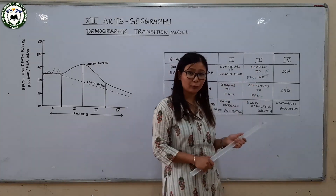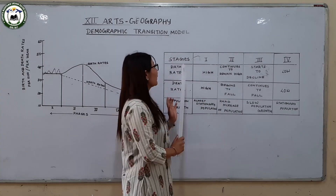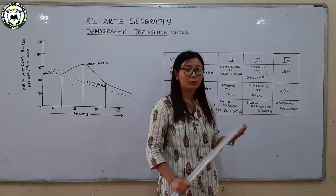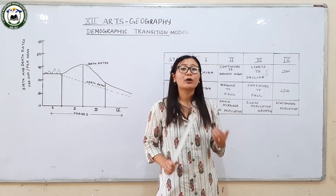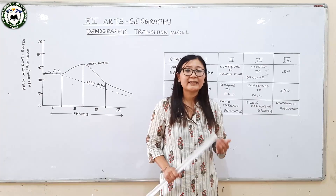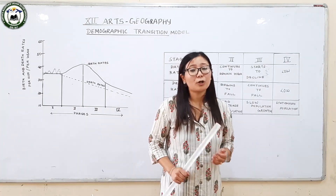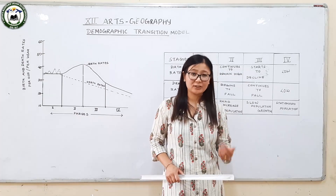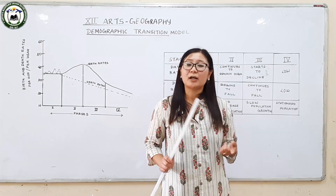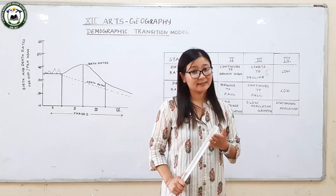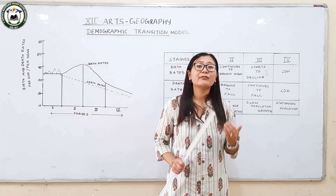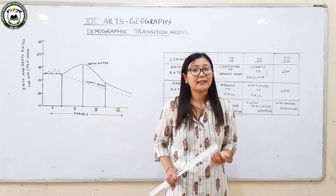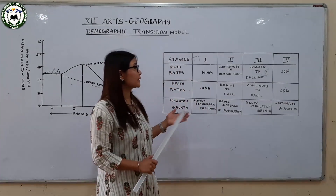Moving towards Stage 4 of Demographic Transition: birth rates are low, death rates are also low, and population growth is stationary or stabilized. Stage 4 is also known as the stage of zero population growth. Most of the developed countries of the world are in this stage of the Demographic Transition Model. For example, Australia, New Zealand, the United Kingdom, and the United States — these countries are highly organized, have strong economies, highly educated and skilled people, and strong healthcare systems.